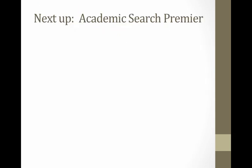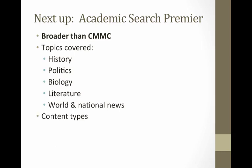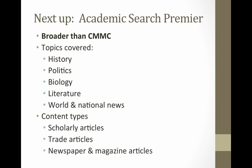The next thing you should consider is something called Academic Search Premier, which for the undergrads is like Google for them — that's where they should start. It's broader than CMMC, Communication in Mass Media Complete. The topics it includes are history, politics, biology, literature, world and national news — pretty much anything you can think of. It's very broad but not very deep. It includes scholarly articles, trade articles, and newspaper and magazine articles.